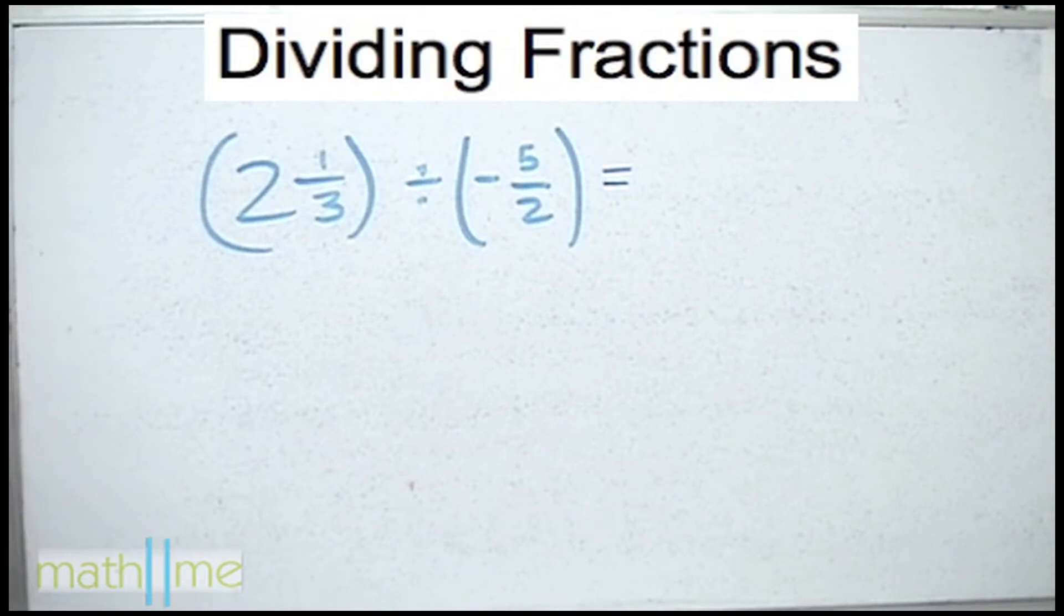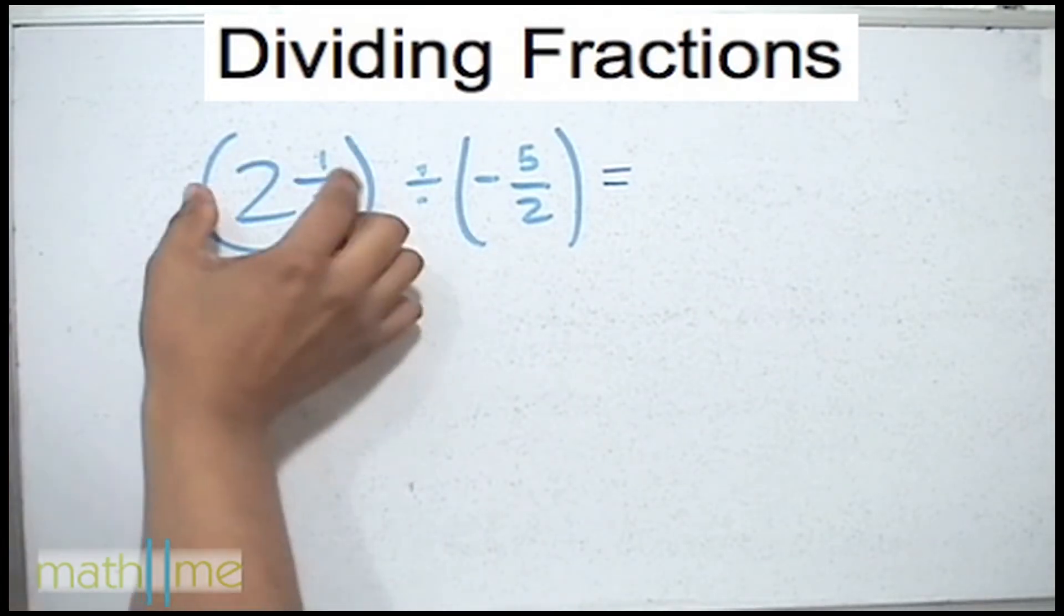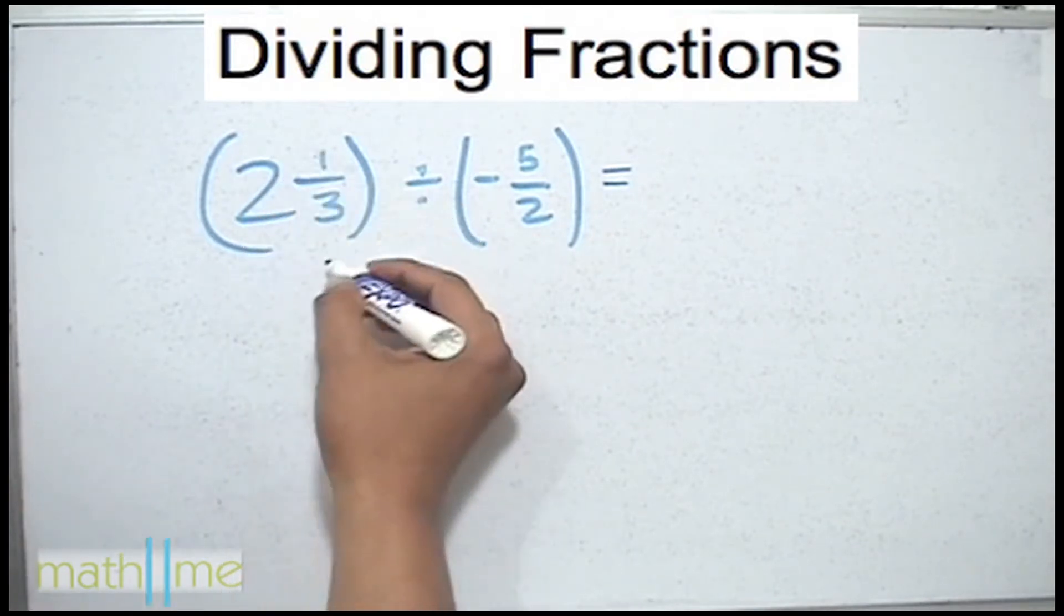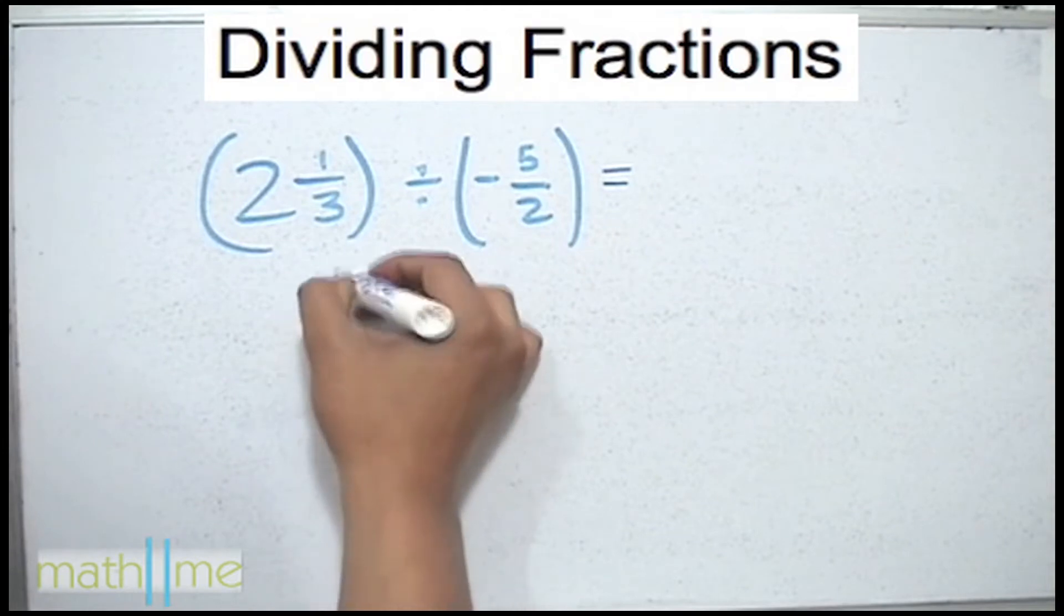When we use mixed numbers in division we need to convert them to improper fractions as we did in a previous example. We multiply the denominator by the whole number then add it to the numerator so we have 7 thirds divided by minus 5 halves.